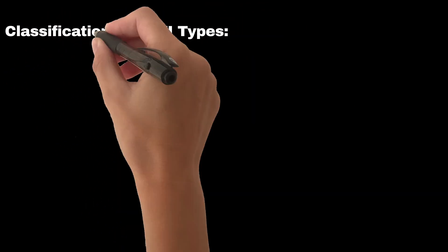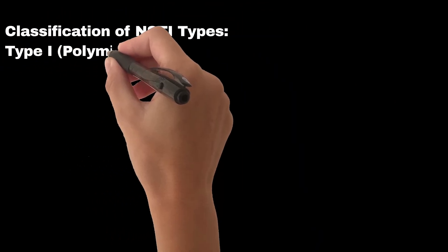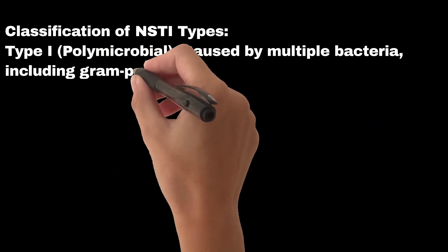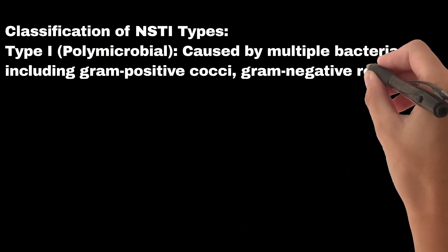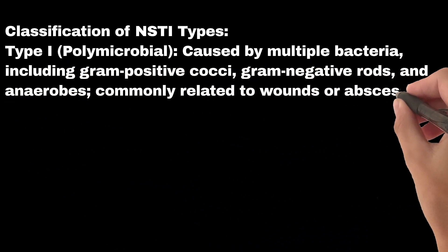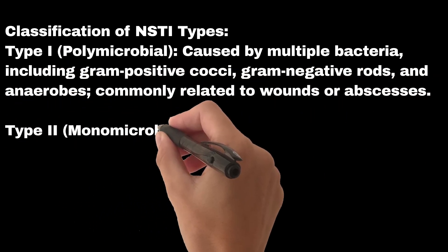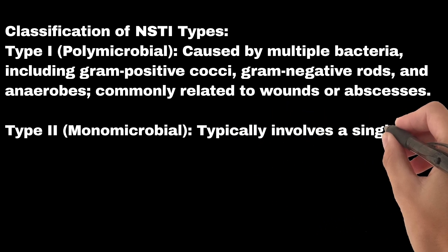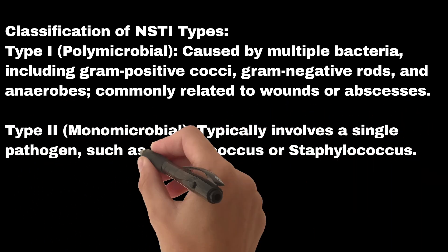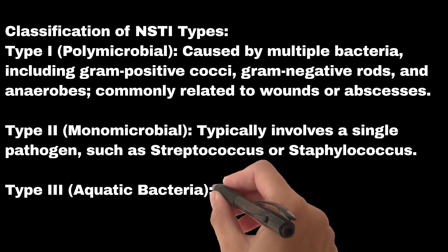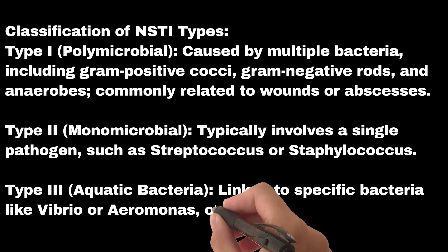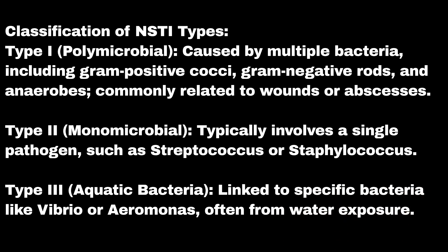Classification of NSTI types: Type 1 is polymicrobial, caused by multiple bacteria including gram-positive cocci, gram-negative rods, and anaerobes, commonly related to wounds or abscesses. Type 2 is monomicrobial, typically involving a single pathogen such as Streptococcus or Staphylococcus. Type 3 involves aquatic bacteria linked to specific organisms like Vibrio or Aeromonas, often from water exposure.